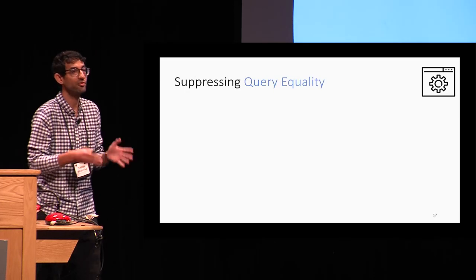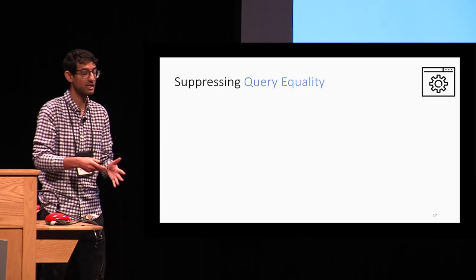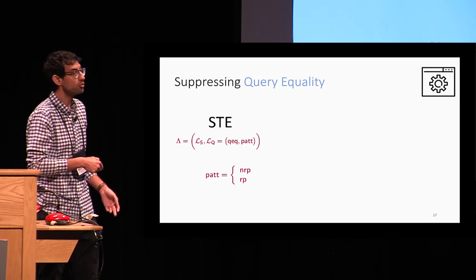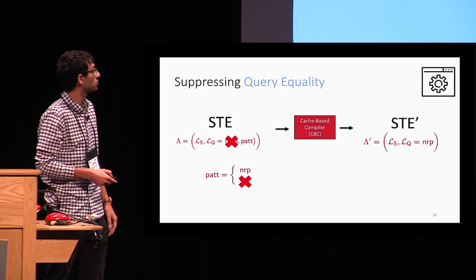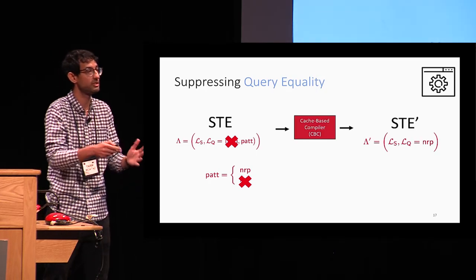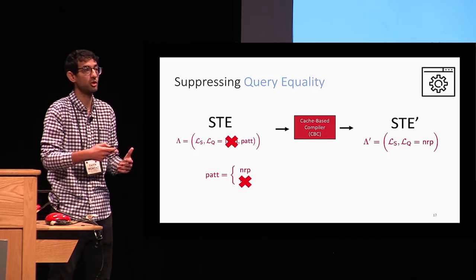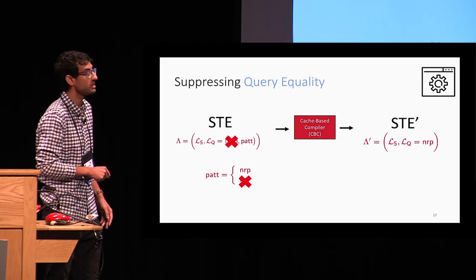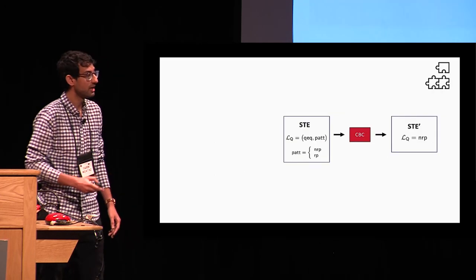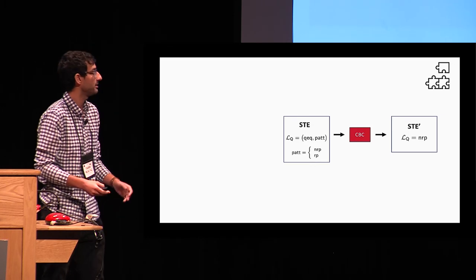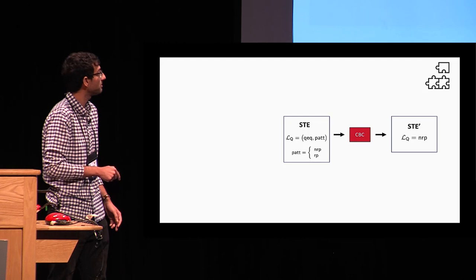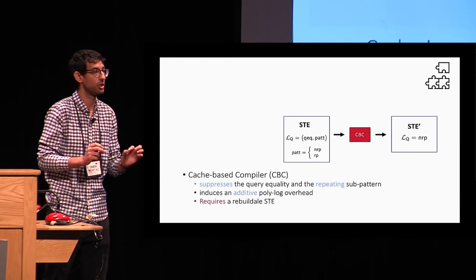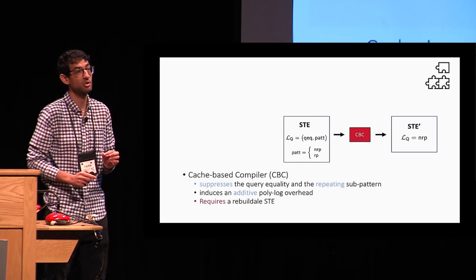In this work, we focus in particular on how to suppress query equality. Consider a structured encryption scheme where the query leakage equals the query equality plus an additional pattern. We view the additional pattern in its non-repeating and repeating form, and introduce what we call the cache-based compiler, or CBC for short. The CBC outputs a new construction whose query leakage is only equal to the non-repeating sub-pattern. In terms of efficiency, our CBC compiler induces only an additive polylogarithmic overhead, contrary to the multiplicative polylogarithmic overhead of ORAM simulation.